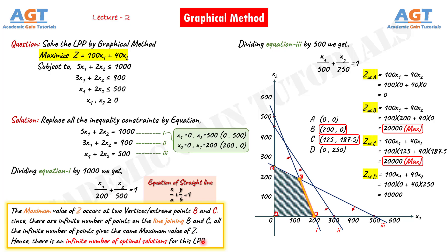This was an example of an infinite number of optimal solutions by graphical method for a linear programming problem. In the next lecture, we will look into examples for the other two cases of graphical method, which are unbounded solution and no solution. Thank you for watching this video.